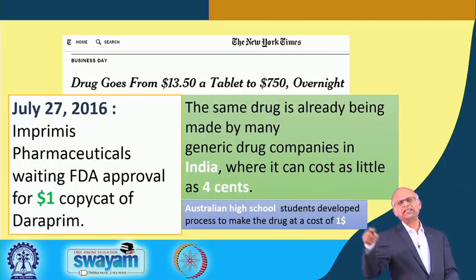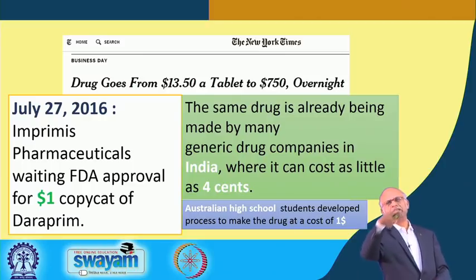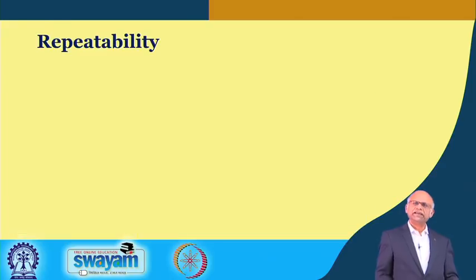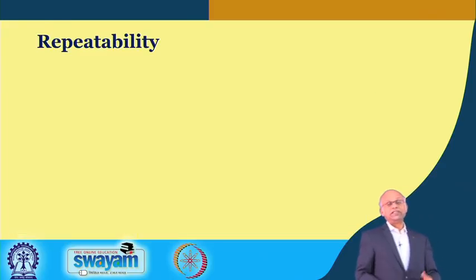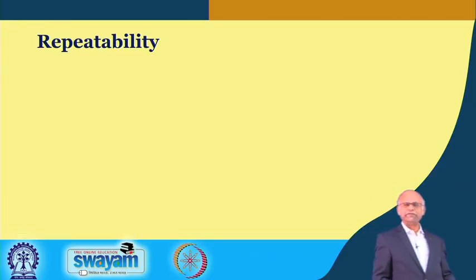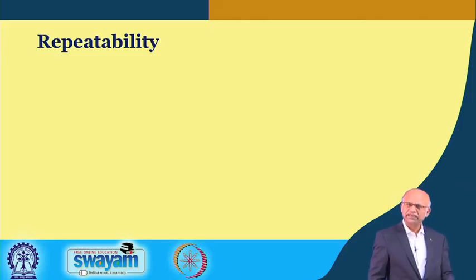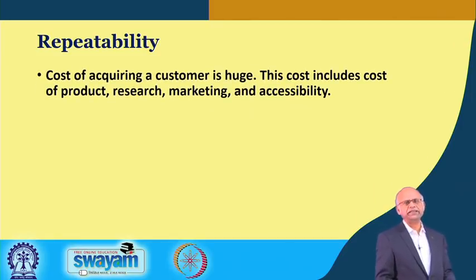This is neither ethical nor sustainable in the long run. If there is a super profit potential for any business, in no time there will be too many competitors. No technology is so difficult that it cannot be copied or reinvented. By July 2015, a copycat was already in the FDA approval process to be sold at $1; in India that drug is available for 4 cents; in Australia, school children came up with a new molecule costing about a dollar. One should be very careful about pricing power and increasing price too much.